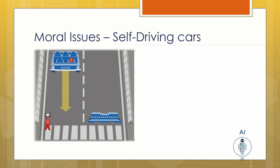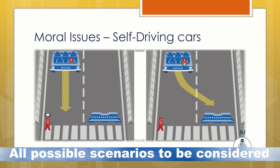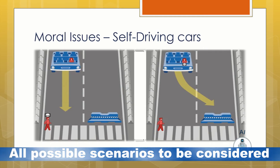Go straight and hit the boy who came in front, injuring him severely, or take a sharp left turn to save the boy and smash the car into a metal pole, thus damaging the car as well as injuring your father. With this scenario, we understand that the developer has to go through all such dilemmas while developing the car's algorithm.